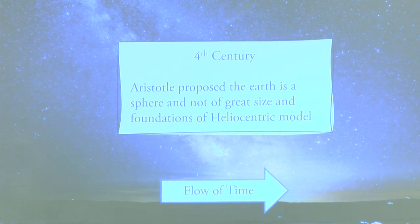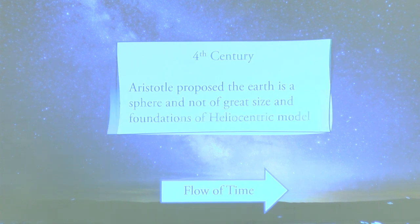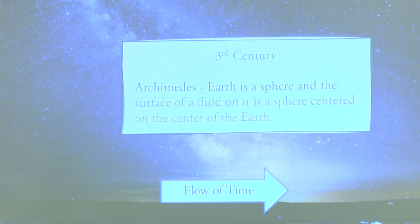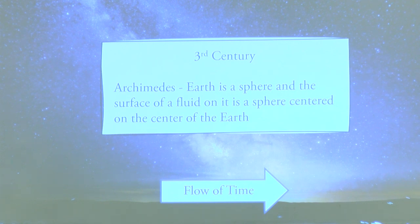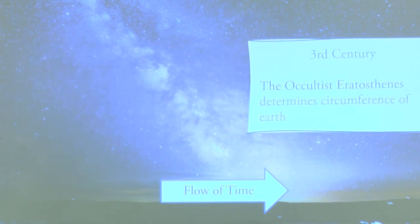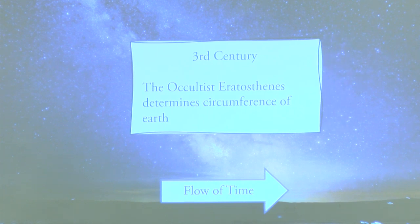Aristotle, 4th century — this is when he believed the earth was not even of great size. These are the foundations of the early forms of the heliocentric model. Then 3rd century — the earth is a sphere, even with all the flat leveled water. And ideas starting to form from there. Then you have the occultus aristotcenis — this is the big famous one that everybody's talking about: obelisks. Who here knows what an obelisk is?